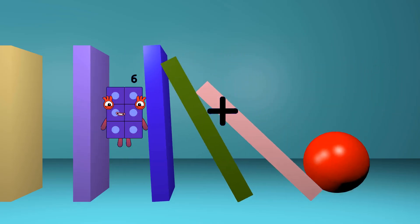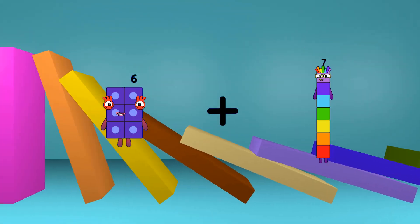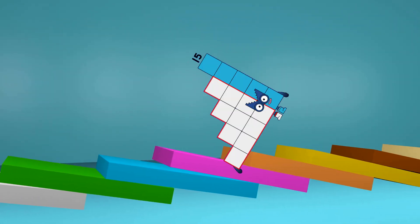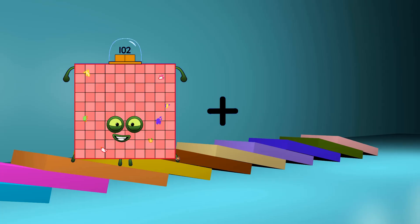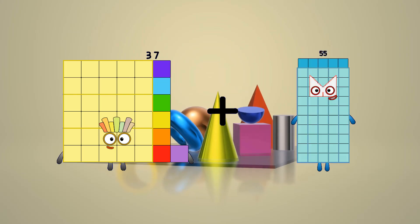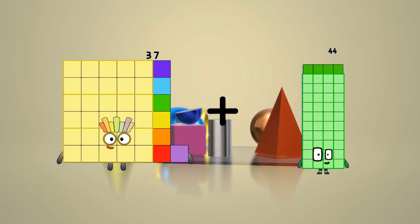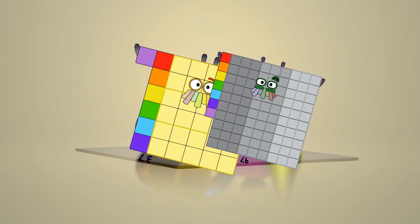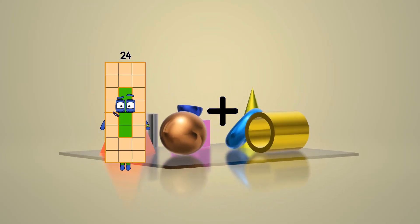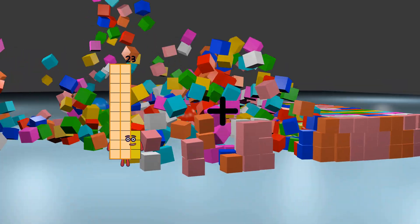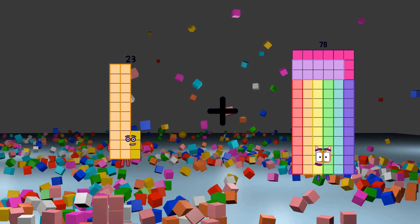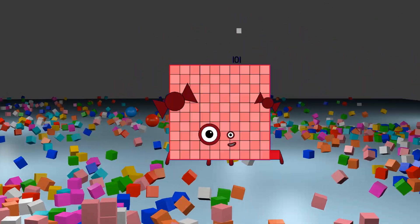6 plus 9 equals 15, 37 plus 97 equals 134, 23 plus 78 equals 101.